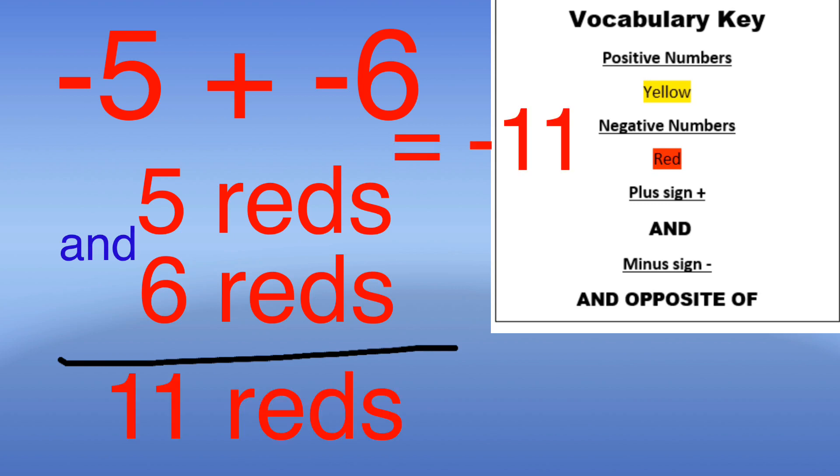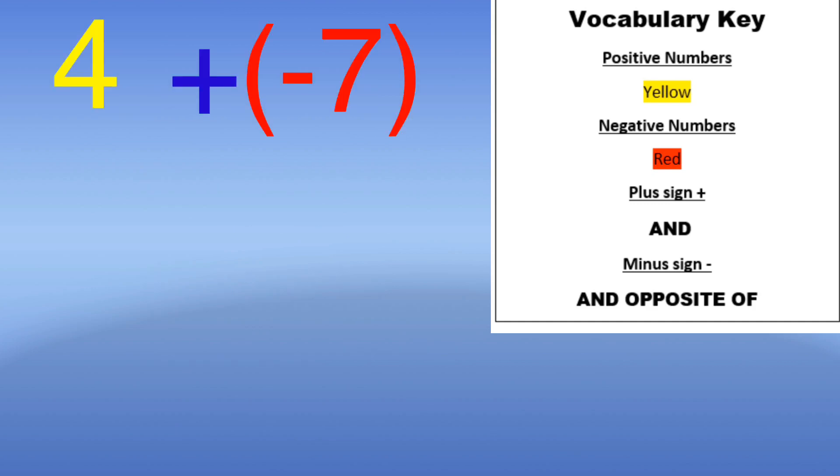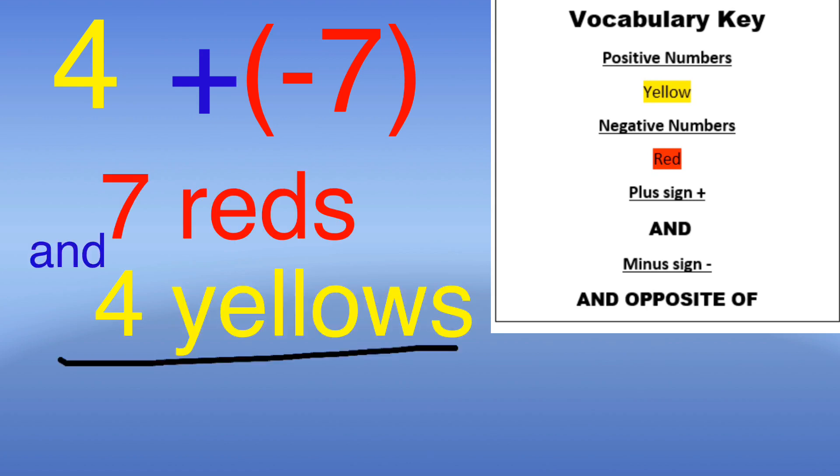Next problem, four plus negative seven. This gives me seven reds and four yellow. I switch the order because when the colors are different I have to subtract. Once I pair those four yellow with four reds from the seven reds I will be left with three reds, making my answer negative three.